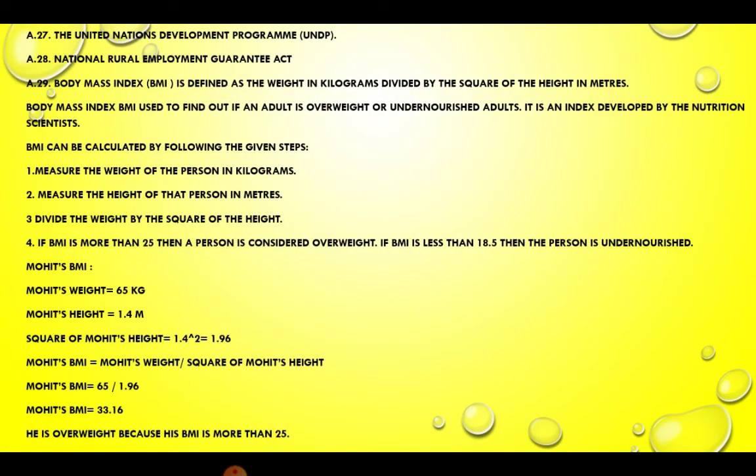Answer 27. The United Nations Development Programme is the full form of UNDP. And NREGA's full form is National Rural Employment Guarantee Act.